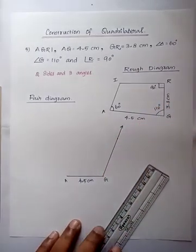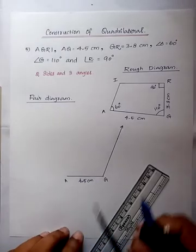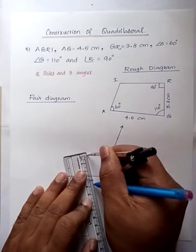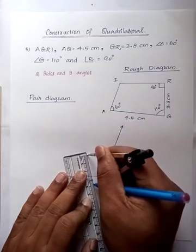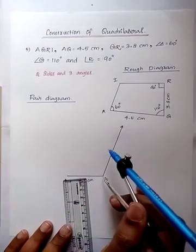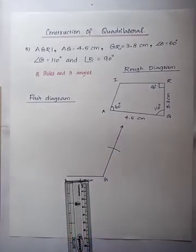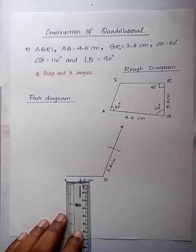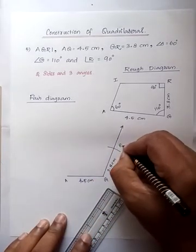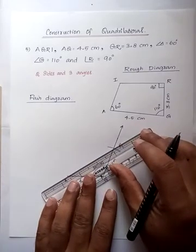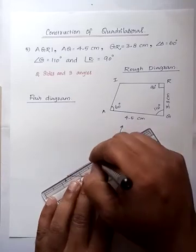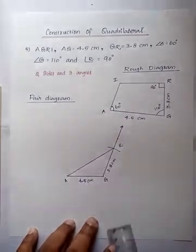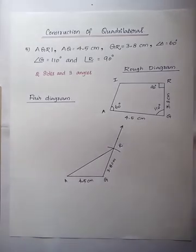Now, GR length is 3.8 cm. Using compass to measure 3.8 cm. 3.8 cm to measure. Now join. What is this point? R. Now join A and R. Triangle complete. Diagonal. Join. So AR.